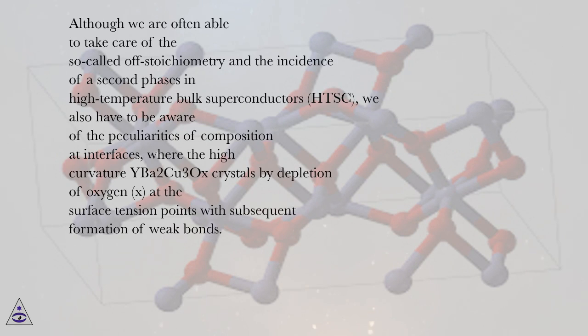Although we are often able to take care of the so-called off-stoichiometry and the incidence of the second phases in high-temperature bulk superconductors, HTSC, we also have to be aware of the peculiarities of composition at interfaces, where the high-curvature YBa2Cu3Ox crystals by depletion of oxygen.